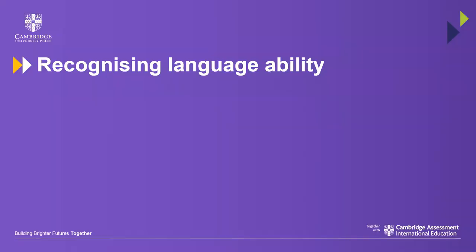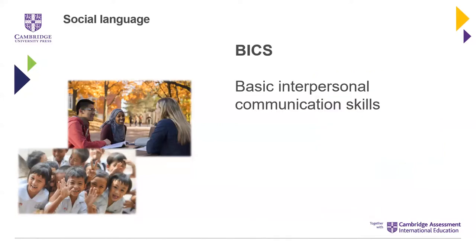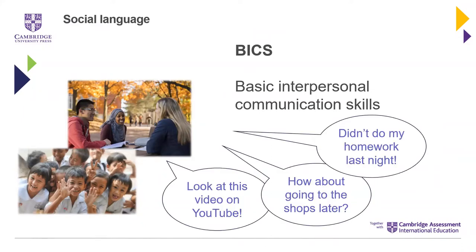One of the most useful distinctions for recognising language ability is the difference between social language and academic language. I've heard teachers say that their learners pretend not to understand in the classroom, yet they hear them outside in the corridor chatting quite easily with their friends. But there's a real difference between the demands of those different settings. Social language we can refer to as BICS — Basic Interpersonal Communication Skills — which is more basic, clearly informal, low-stress, and the sort of language you hear and use very commonly.